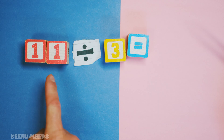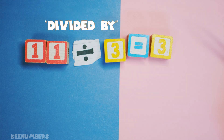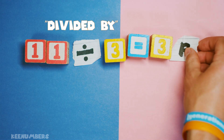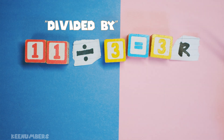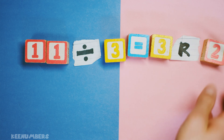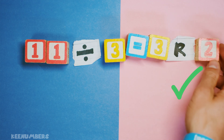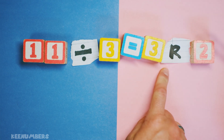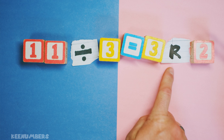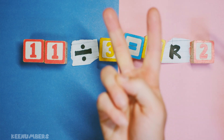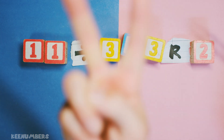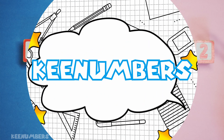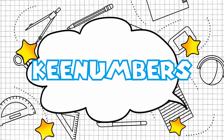So 11 divided by three is equal to three. But we had two left over. So we just say 'R' — that means remainder. In other words, we have two left over. So it's three remainder two.